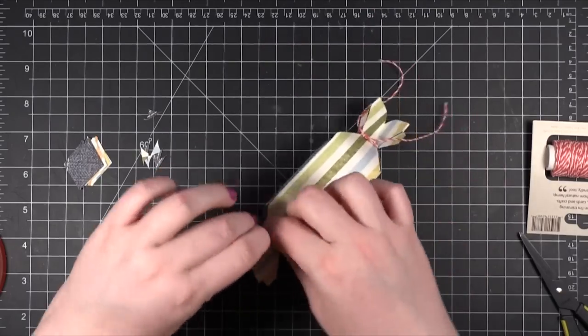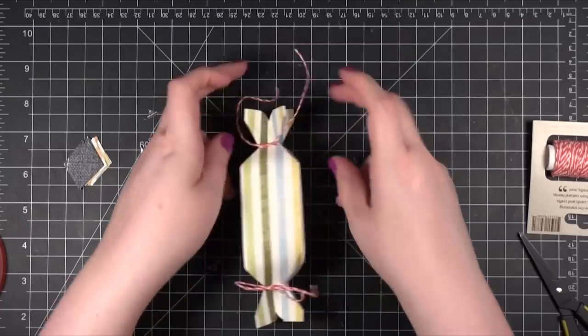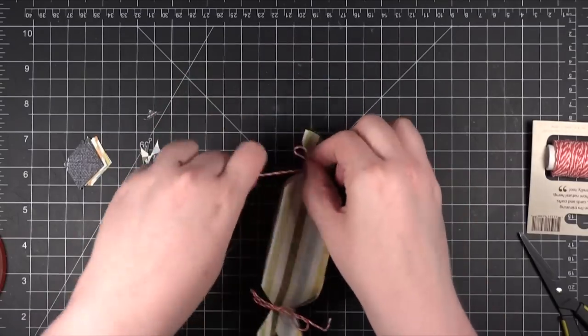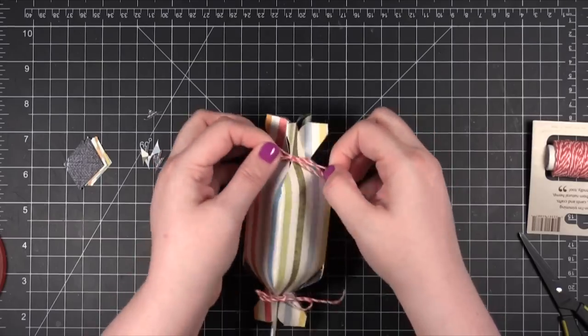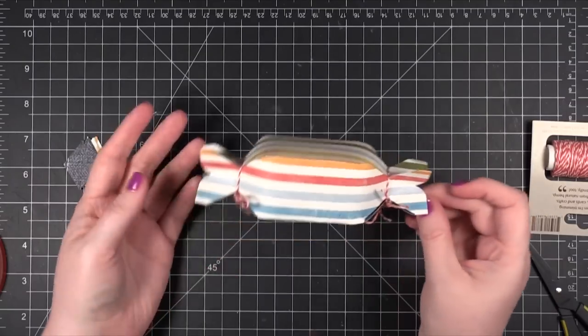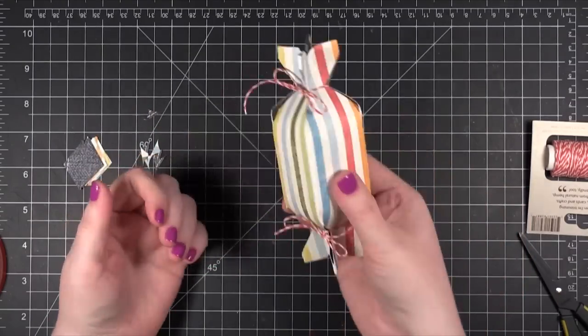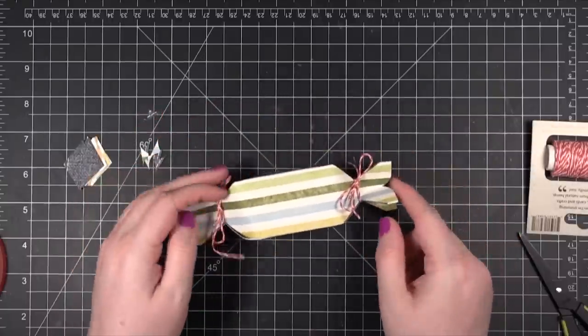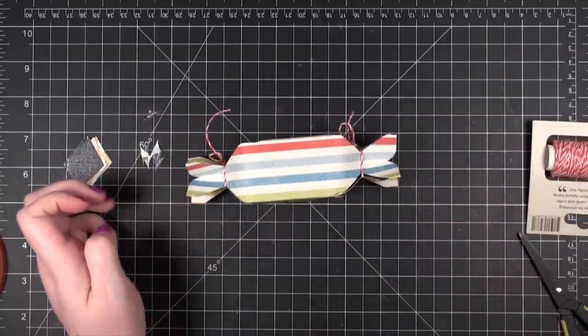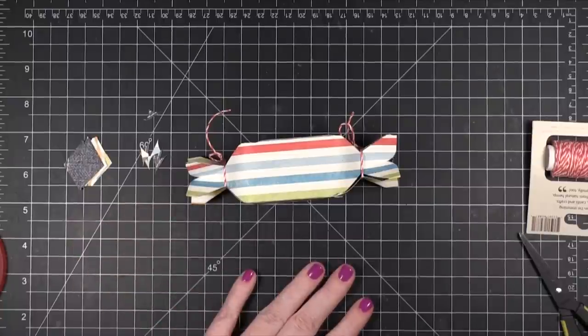And if you want you can go ahead and tie a bow on each end. I think this is a really cute way to package up any candies or little treats that you want to give anyone. Great for any holiday or like I said before Valentine's Day. So that is how you use the We Are Memory Keepers candy box punch board. And thanks for watching. I'll catch you guys next time.